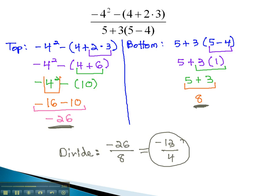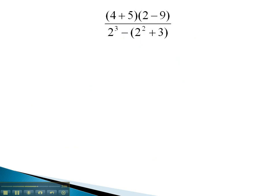Let's look at one more example that uses fractions, simplifying both the top and the bottom, before we divide. In this example, on the top, we have 4 plus 5, times 2 minus 9.